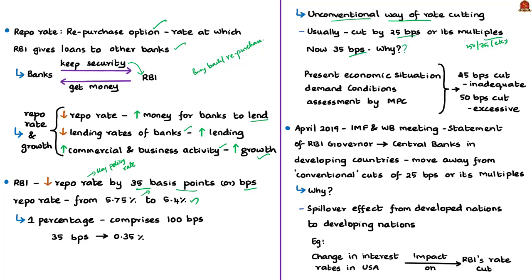Why this unconventional reduction? The RBI governor said that considering the economic situation, demand conditions, and the assessment of the Monetary Policy Committee, a 25 basis points cut was inadequate and a 50 basis points cut was too excessive. So the RBI went for a suitable cut of 35 basis points. The editorial refers to this as RBI's 'Goldilocks cut' — a term denoting neither too small nor too large, meaning a balanced position.